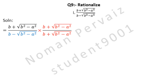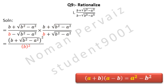So we have multiplied and divided with the conjugate, which is B plus under root B squared minus A squared. Is equal to: B plus under root B squared minus A squared, multiplied with B plus under root B squared minus A squared, becomes B plus under root B squared minus A squared whole square. Here we are going to apply the formula given below, which is (A + B)(A - B) = A squared minus B squared.